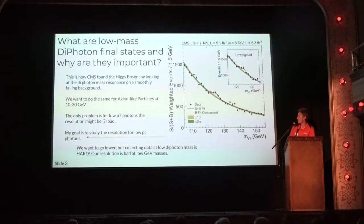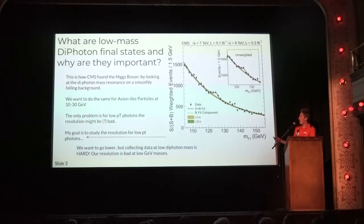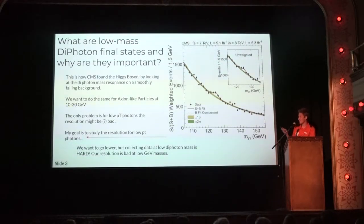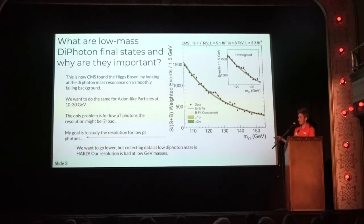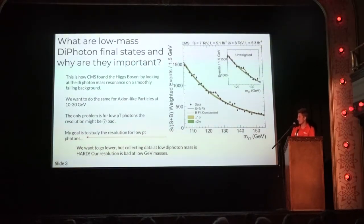They are important because there is potential that the diphoton final states have decayed from a new unknown particle that we call axions. The way we were going to find this was to do a similar photon resonance search — like how they found the Higgs boson — but instead of at 125 GeV, we were looking at 10 to 30 GeV, about ten times less energy than the Higgs boson.